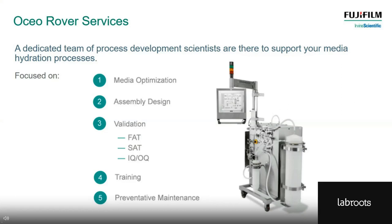We can also look at assembly design — you may want to change the assembly to accommodate some sampling regimes. But fundamentally, the assembly is what enables the process to work, so we won't be changing the flow paths and direction. Going into manufacturing, you'd look for support from us as the equipment vendor through the validation cycle — through the factory acceptance test, site acceptance tests, installation and operational qualification, and possibly support around performance qualification. Training and preventative maintenance are also important with any equipment.